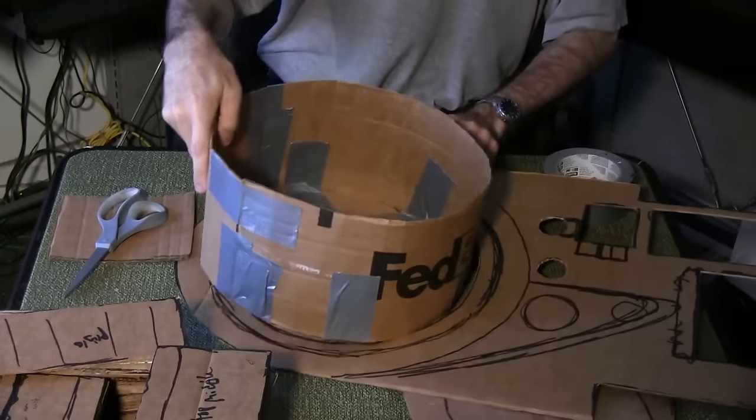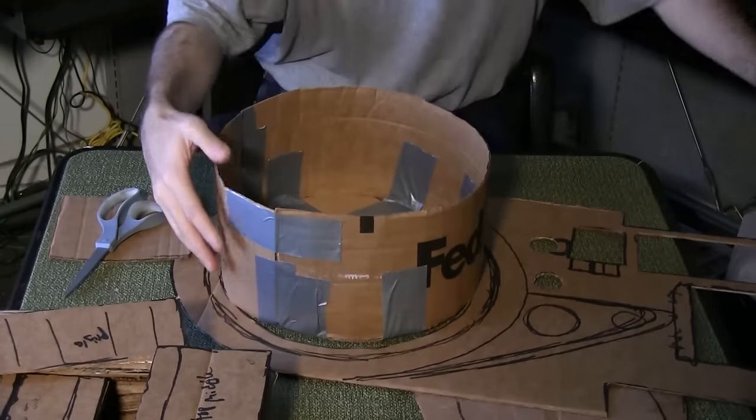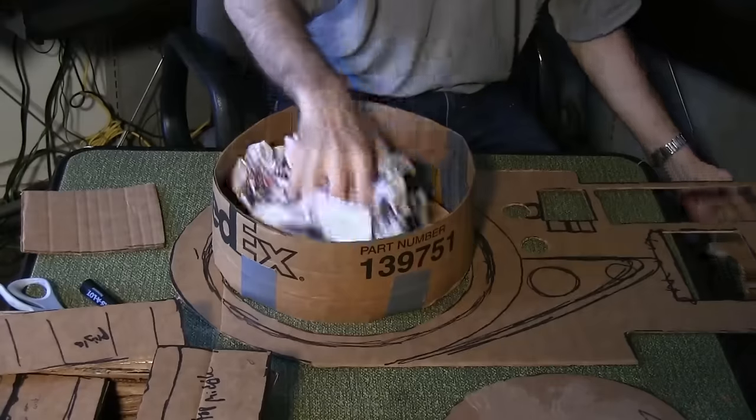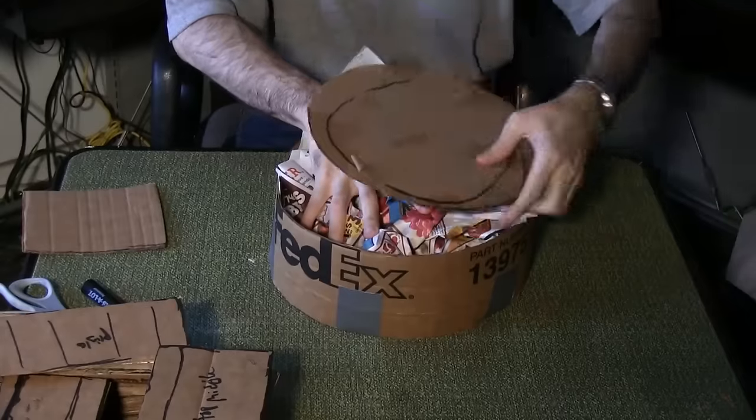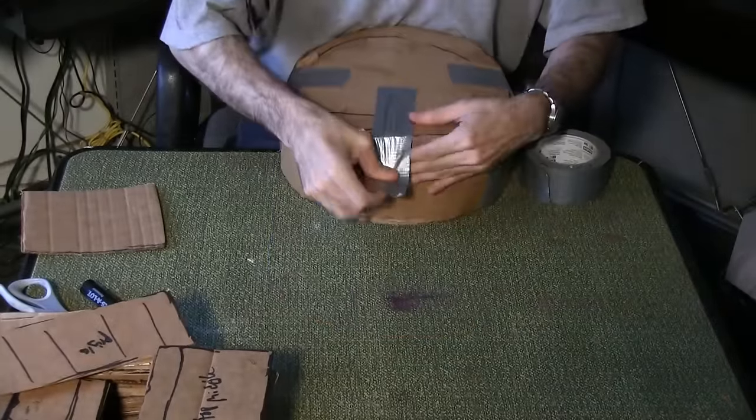Make sure this piece fits inside the main template. I can't stress enough how important this is to our process. Fill the circle box with newsprint for extra stability. Place the second circle on top and seal it together with duct tape.